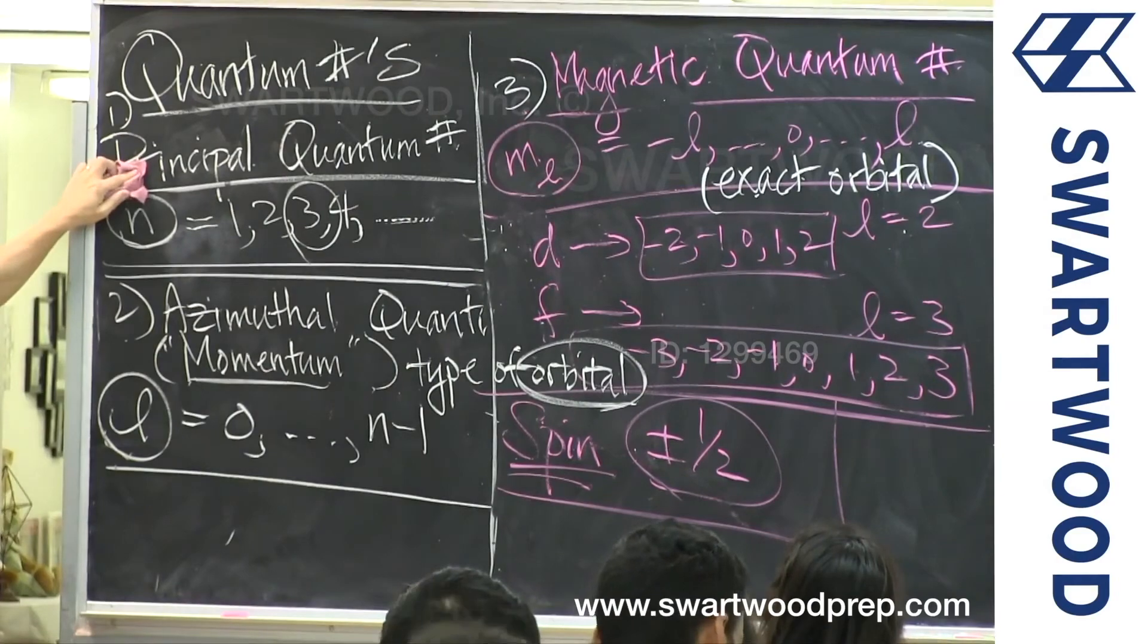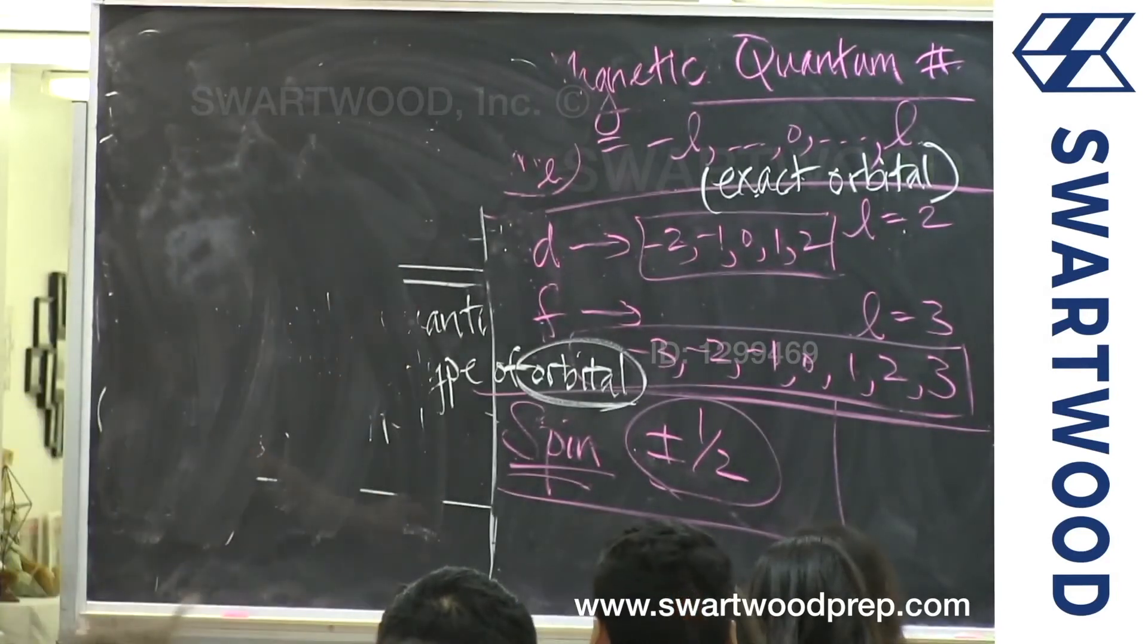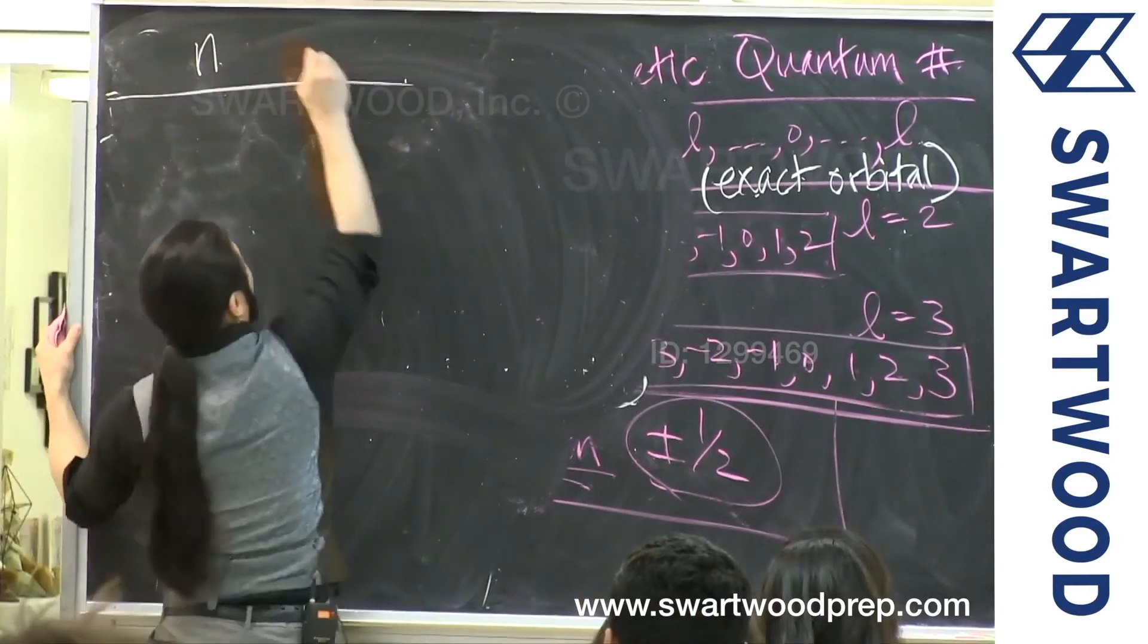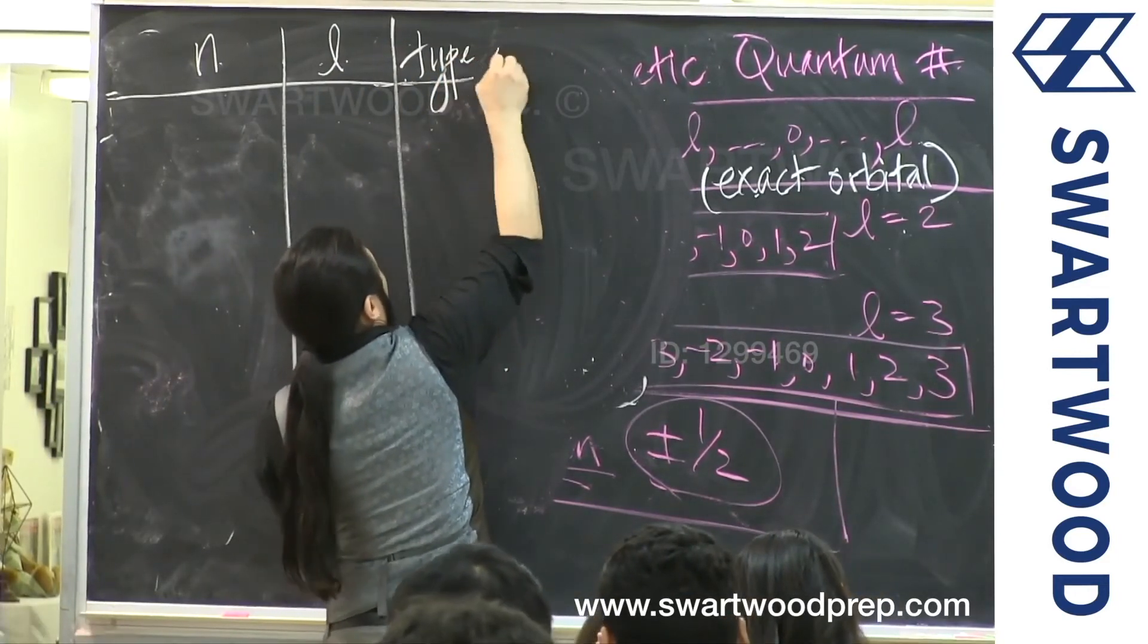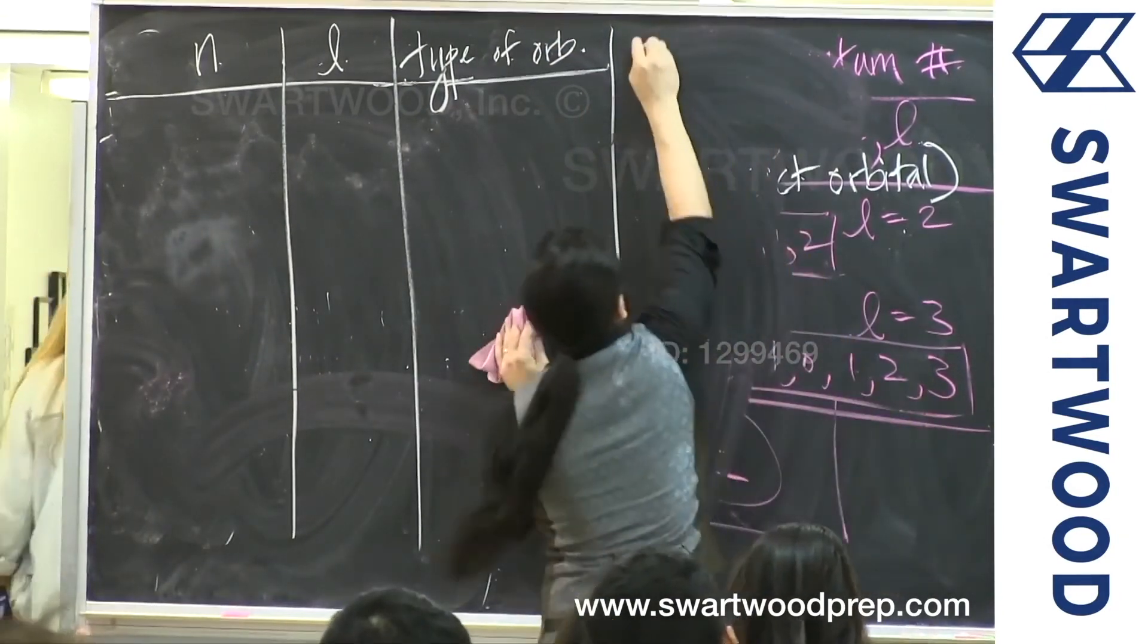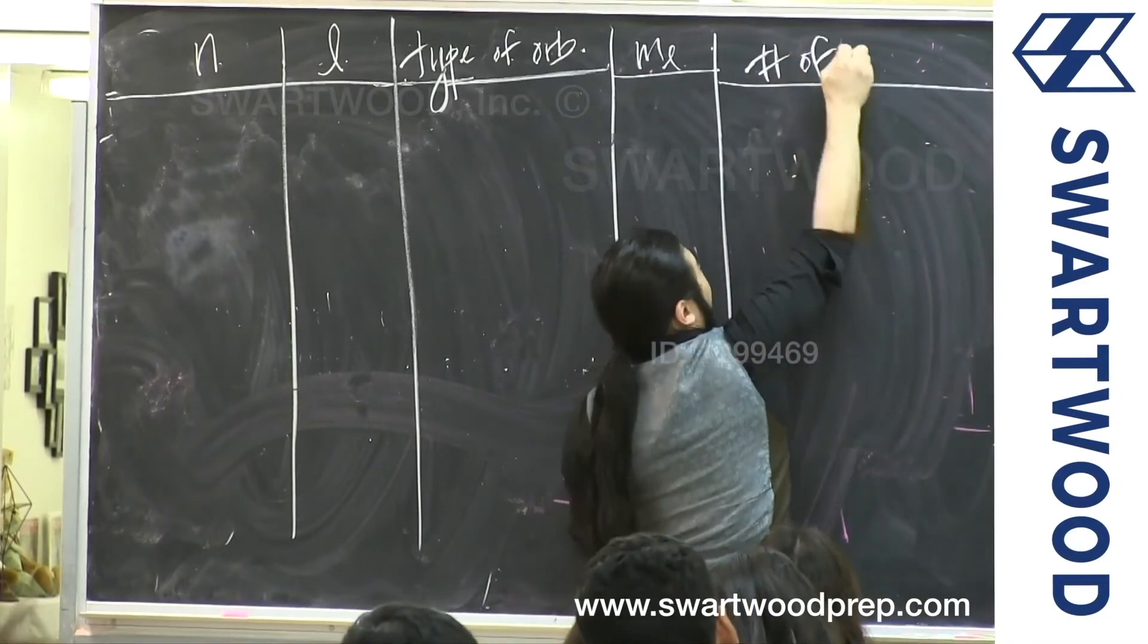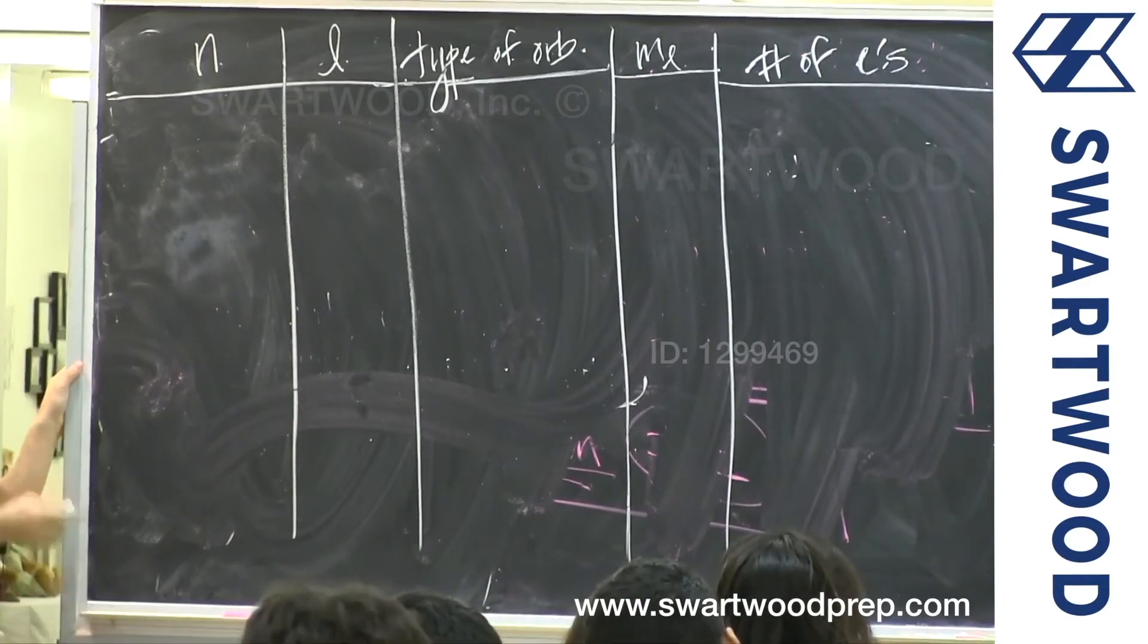This is it though. It just comes down to this and then we can let it all go. Last thing before we leave this. Let's do a cheesy table. So I'm going to do N, L, type of orbital, exact orbital name, and then we don't need to do spin because that's silly. It's always plus or minus a half. So let's do the number of electrons. And let's get some connections out of it. Not hardcore science, but we're going to get some good connections.